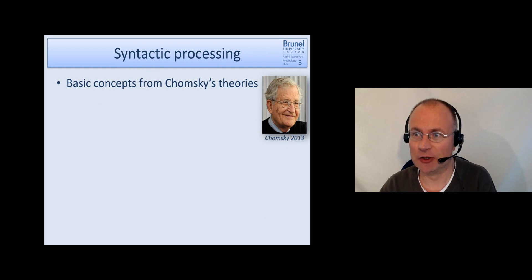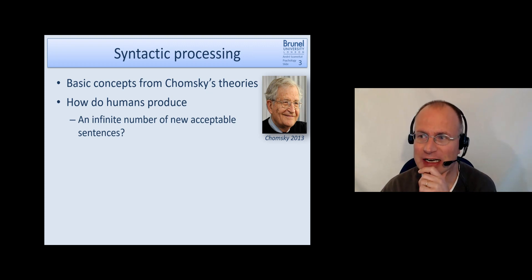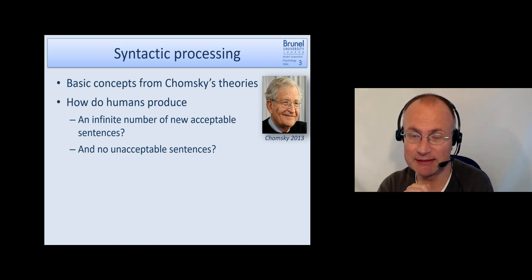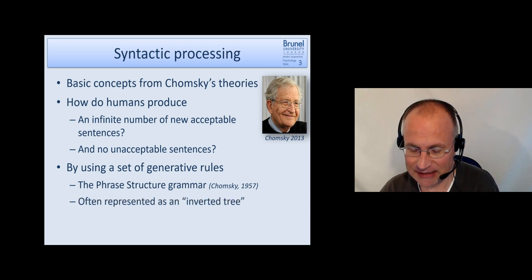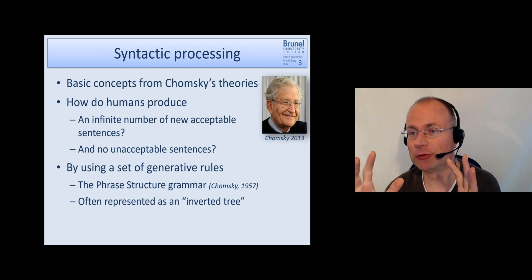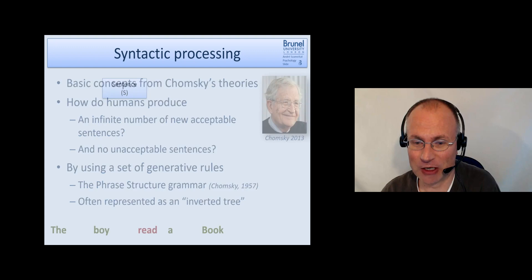So we look at Noam Chomsky again and one of the basic concepts of his theories was how do humans produce an infinite number of new acceptable sentences and very rarely unacceptable sentences. The suggestion is that we are using a set of generative rules, and he called that the phrase structure grammar. This phrase structure grammar is often represented as an inverted tree and we will have a good look at this in this part.